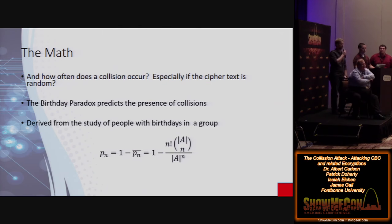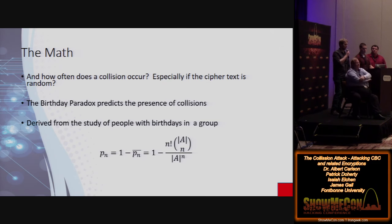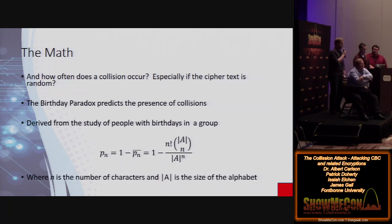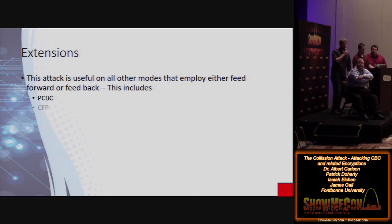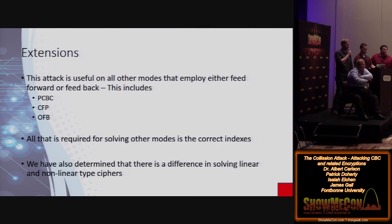For those who don't know, the birthday paradox is a study on how to determine the odds of two people in a group sharing a birthday, and we can apply this same thing to any random system. It turns out that according to the birthday paradox, we only need 6% of the total alphabet — or total possibility of blocks — to get a 50% chance of a collision, and having only 16% of the total gives us a 99% chance. This attack will be useful for any cipher mode that incorporates feedforward or feedback, including those listed on the screen. All we need to do is adjust for the algorithmic differences, which are subtle at best.